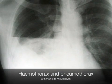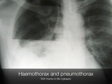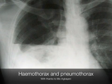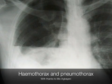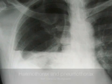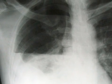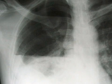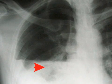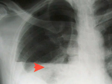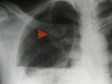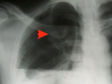Here we can see the consequences of a penetrating chest injury in the form of a stab wound to the right upper chest. The x-ray shows a hemothorax and also a pneumothorax.